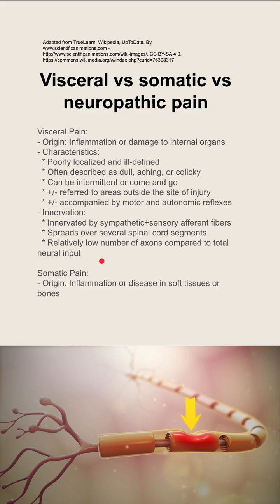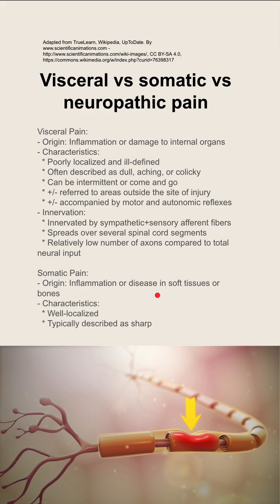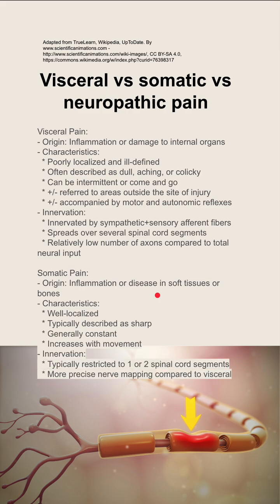Somatic pain, on the other hand, originates in soft tissues or bones. It can be inflammation or disease in the soft tissues or bones. It's usually well localized and described as sharp. It's usually constant, and it increases with movement. The innervation is typically restricted to one or two spinal cord segments, and there's more precise nerve mapping compared to visceral pain.